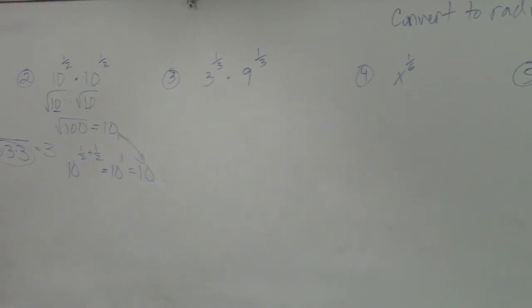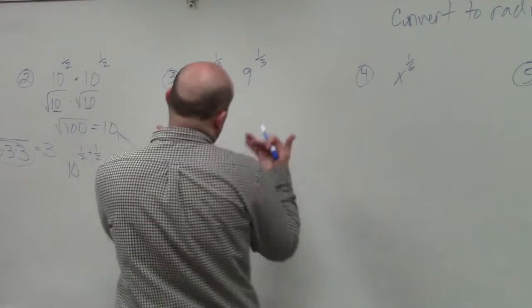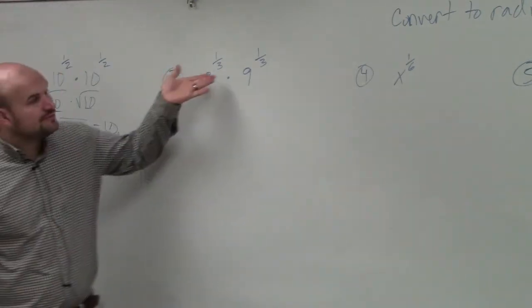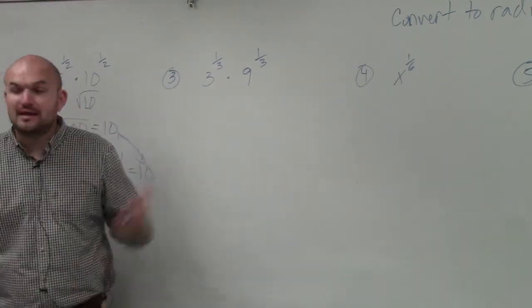Difficult ones, the ones that you guys might be able to see like on a test. For instance, here I have 3 to the 1/3 times 9 to the 1/3. Now there's a problem.